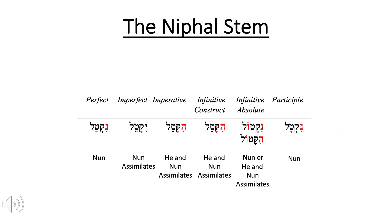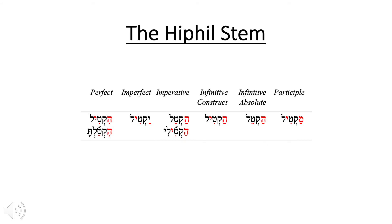The next stem is the Niphal. The Niphal perfect is indicated by the nun-hiriq prefix. All other forms of the Niphal have a qamets under the first root letter plus a dagesh in that first root letter — unless the nun shows up, as in the participle and infinitive absolute, in which case the nun prefix is the giveaway. The imperative and infinitive construct both have a nun prefix, and occasionally the infinitive absolute as well. However, it is that qamets and dagesh in the first root letter that indicates this is a Niphal. The Niphal stem is typically referred to as the passive stem — that's a stereotype, not always the case.